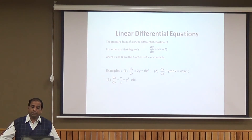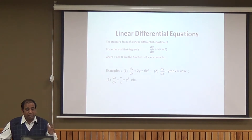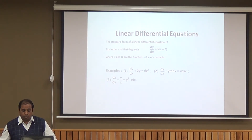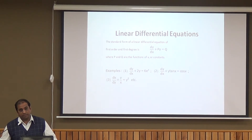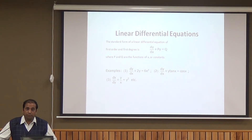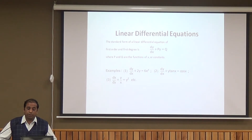Now we have the linear differential equation type. The standard form of the linear differential equation in first order and first degree is dy/dx + Py = Q, where P and Q are functions of x or constants. For example: dy/dx + 2y = 6eˣ, where P = 2 and Q = 6eˣ; dy/dx + y tan x = cos x, where P = tan x and Q = cos x. The second type is dx/dy + Px = Q, where P and Q are functions of y — for example, dx/dy + y/x = y², where P = 1/x and Q = y².